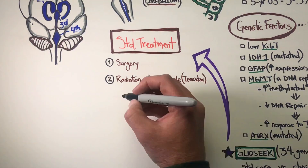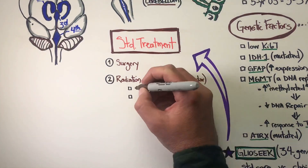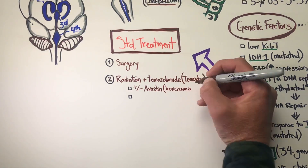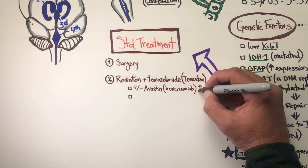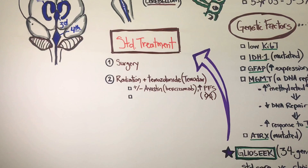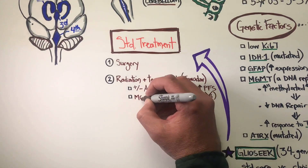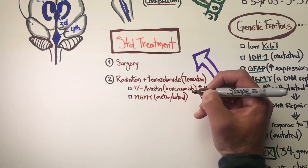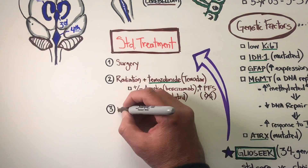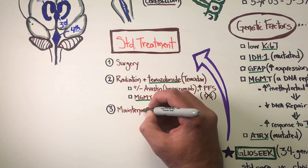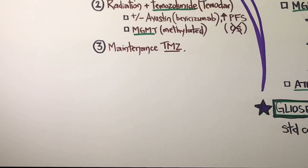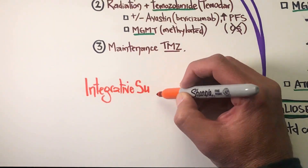The cornerstones of standard care still revolve around surgery and tumor resection, followed by radiation, and then temozolamide. Avastin or bevacizumab can also be added to your case — it has been shown to increase progression-free survival, not overall survival, but longer periods of time in remission. MGMT is something to really look at with your medical oncologist, as it shows increased response rates to temozolamide, which is also used as maintenance after definitive resection and radiation.